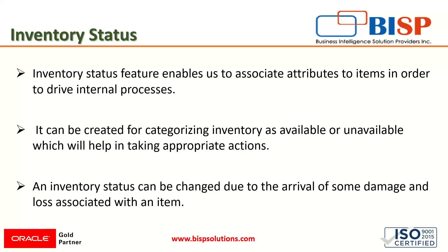If we talk about the inventory status change, let's take an example. If we have 20 units that are being damaged due to some reasons, we can change the status of those units from good to damage so that such items cannot be used for being sold — meaning they cannot be used for further transactions as the goods are damaged. So in that manner, we can change the status of any inventory item.